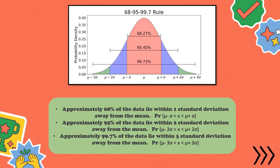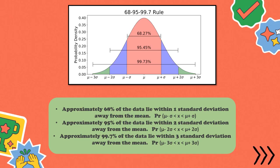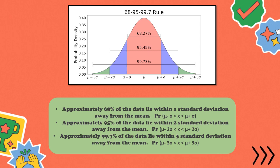Next, approximately 95% of the data lie within two standard deviations away from the mean. Earlier it was one standard deviation; now to determine the 95%, we look at two standard deviations away from the mean. The blue and pink parts represent the 95% coverage. The formula is the same, but the standard deviation is multiplied by two.